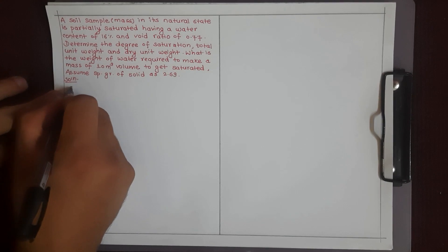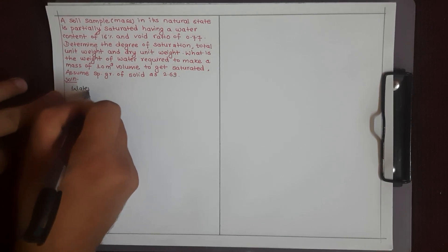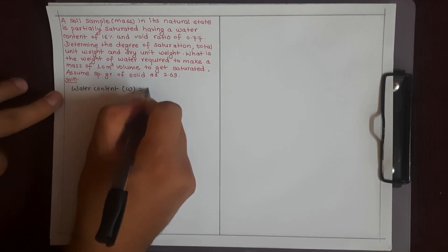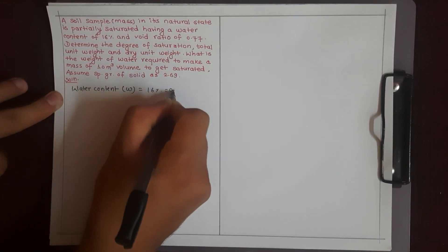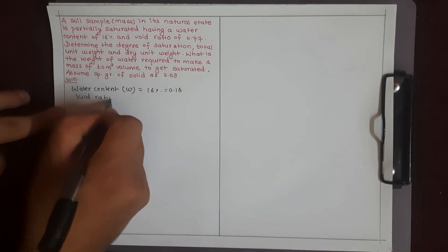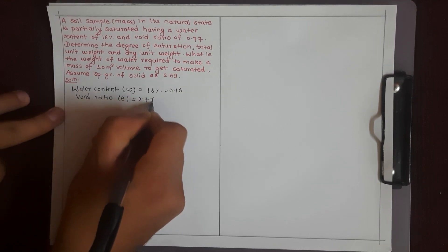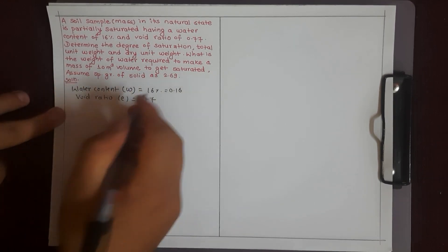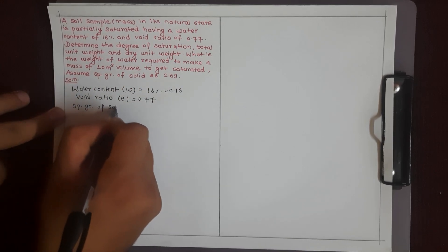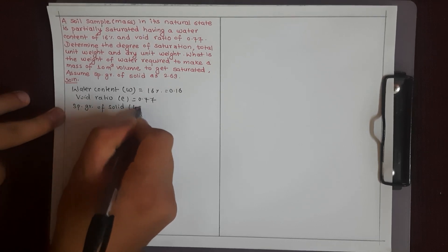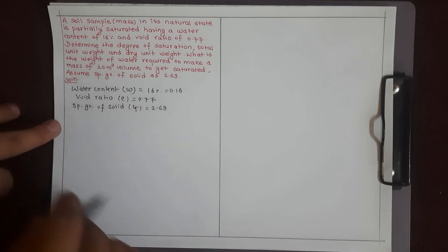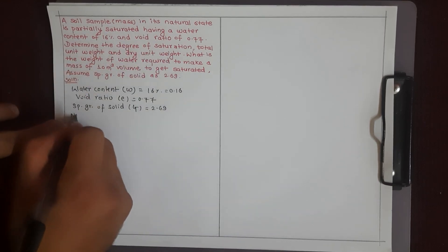First, the given values: water content w = 0.16, void ratio e = 0.77, and specific gravity of solid G = 2.69.